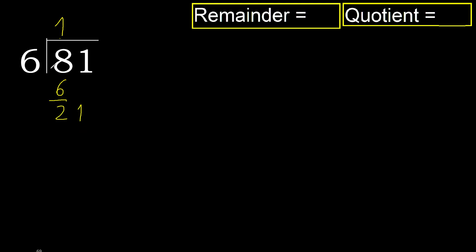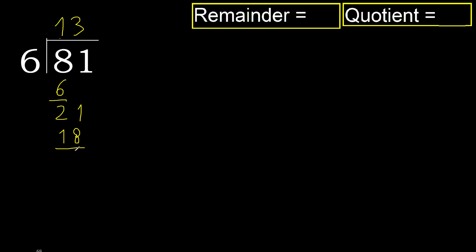21. 6 multiplied by 4 is greater. 6 multiplied by 3 is 18 — 18 is not greater, ok. Subtract: remainder is 3.